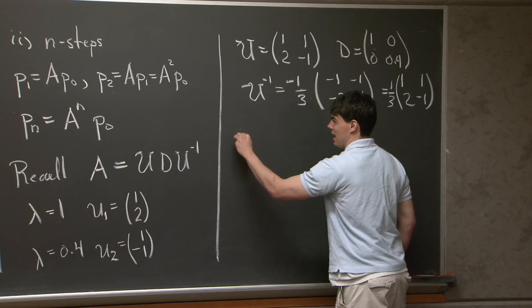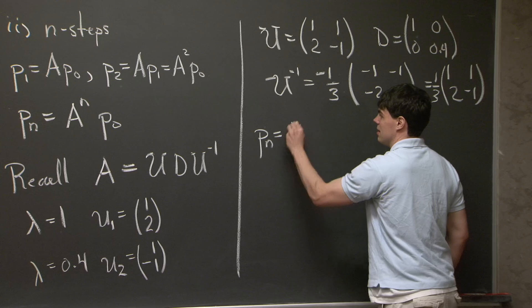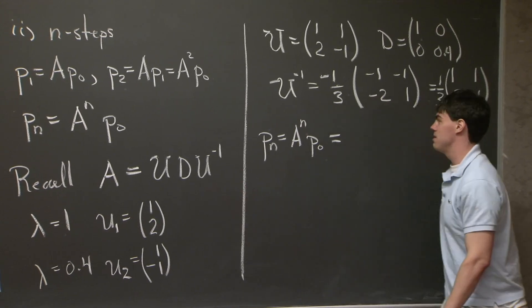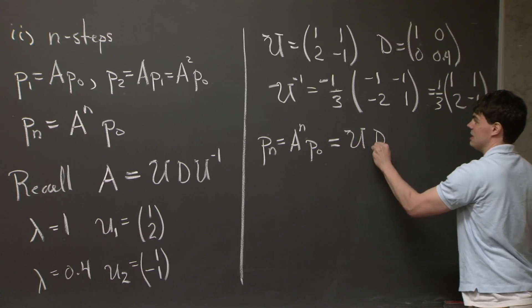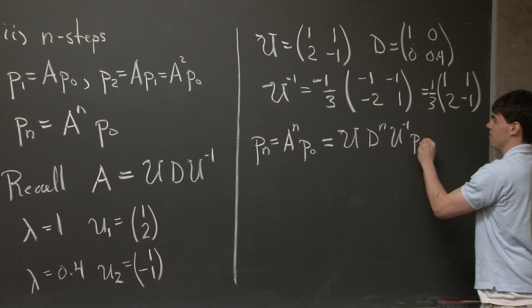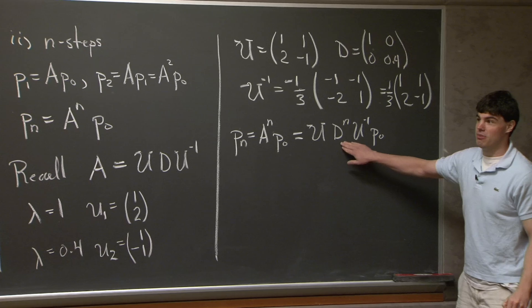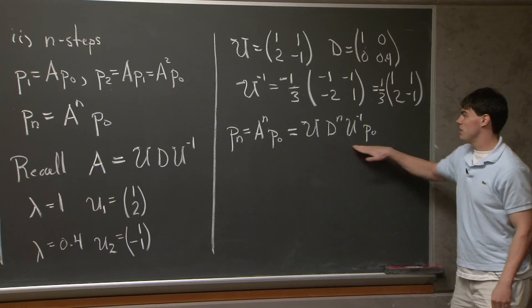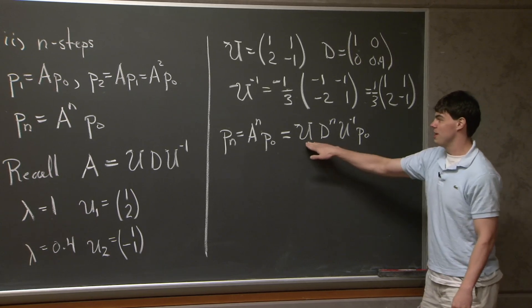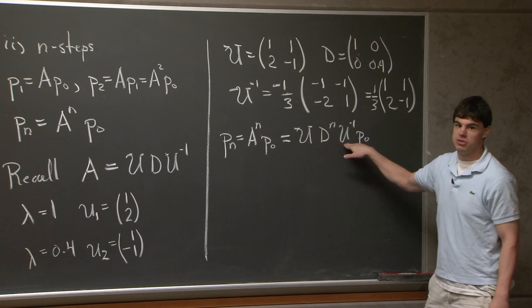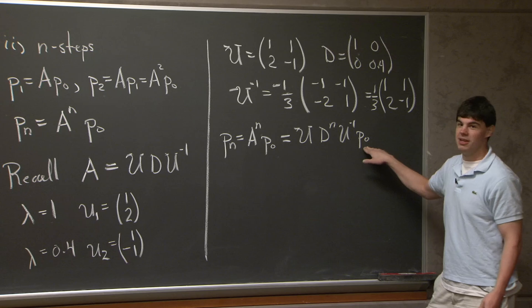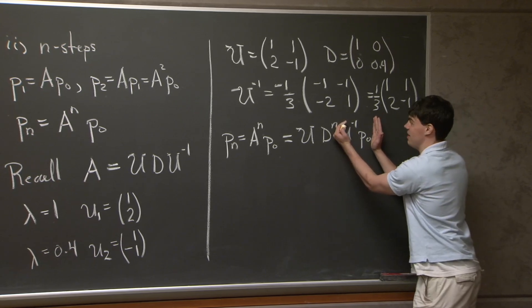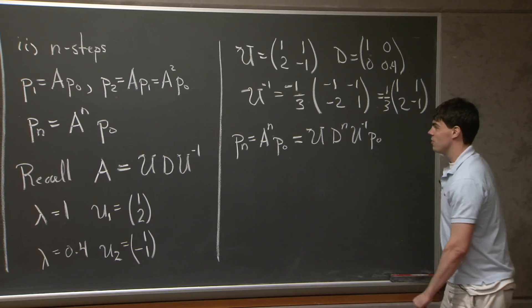OK, so now if we take A and raise it to the power of n, we have this nice identity that all the U and U inverses collapse in the middle. And we're left with U, D to the n, U inverse, p0. Now, raising a diagonal matrix to the power of n is a relatively simple thing to do. We just take the eigenvalues and raise them to the power of n. So when we compute this product, there's a question of what order do we do things. Now, these are 2 by 2 matrices. So in theory, we could just multiply out 2 by 2 matrix, 2 by 2 matrix, 2 by 2 matrix, and then on a vector, which is a 2 by 1 matrix. But if you're in a test and you're cramped for time, you want to do as little computations as possible. So what you want to do is you want to start on the right-hand side, and then work backwards.